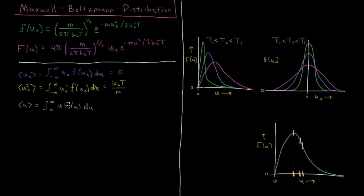Continuing on: we take this distribution and multiply it by u, giving u cubed, then integrate from 0 to infinity. If you solve that integral, the average speed comes out to be the square root of 8RT divided by π times the molar mass of the particle.